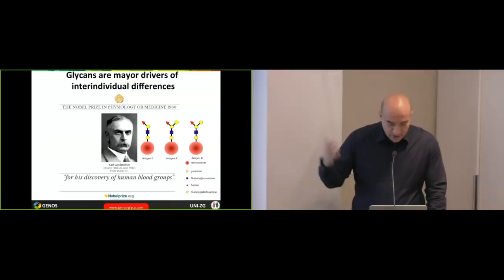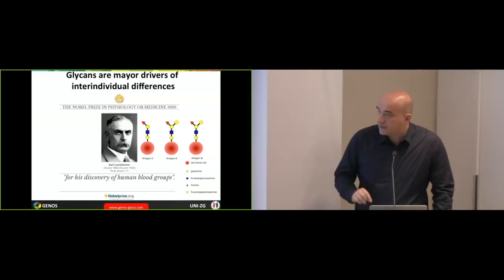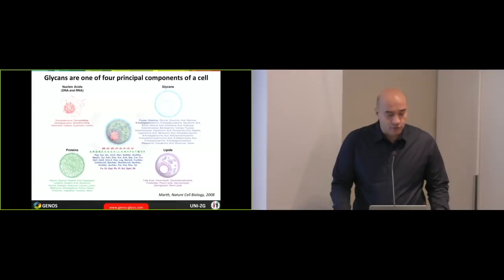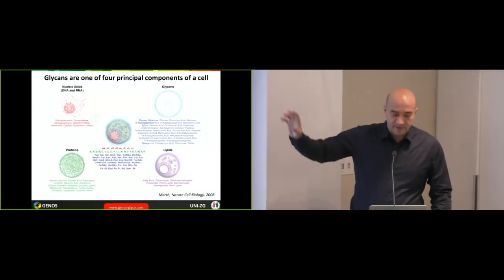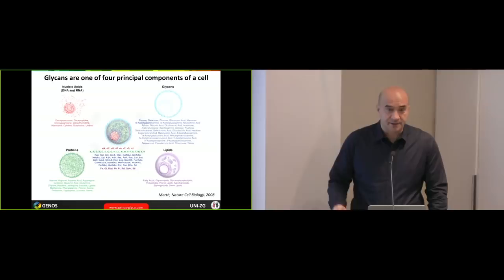And definitely people are different. And the molecules in which we are the most different are the glycans. And actually, there was a Nobel Prize for that in, I think, 1930. Karl Landsteiner got this for discovery of the blood groups, because ABO blood groups are glycans. We just don't think about them in that way. And actually, glycans are one of four principal components of a cell. So the cell will have its nucleic acids, will have the proteins, will have the lipids, and will have the glycans.